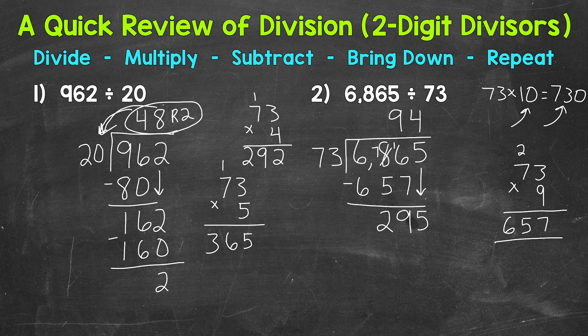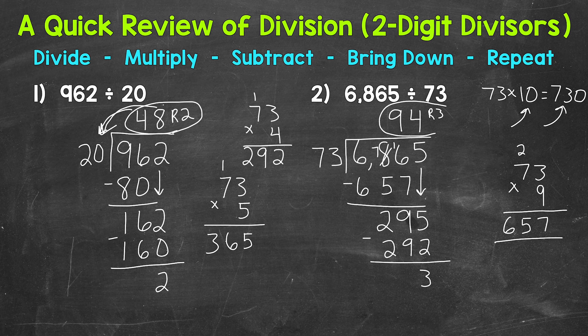So let's put our 4 up here. And then we multiply. 4 times 73 is 292. Subtract. 5 minus 2 is 3. And then we have 9 minus 9 is 0. And 2 minus 2 is 0. After subtracting, we bring down. We went all the way over to the ones place. We do not have anything else to bring down. So that 3 is our remainder. So we get 94, remainder 3, for our final answer.